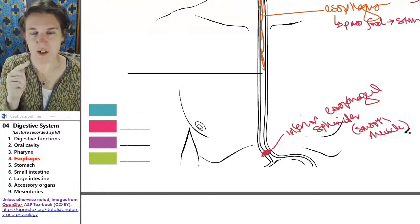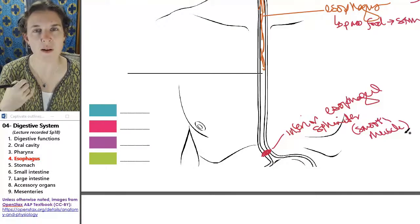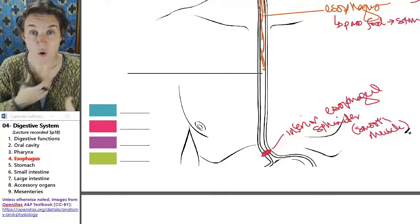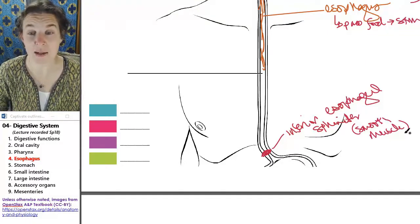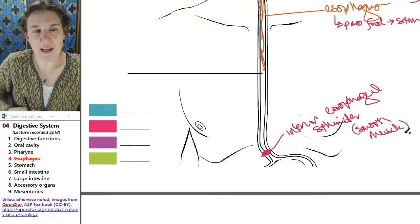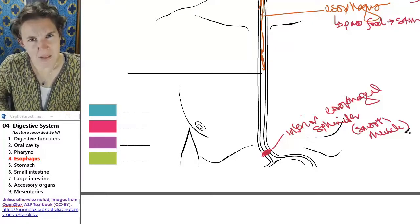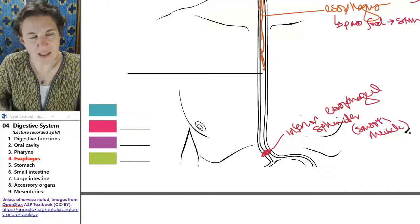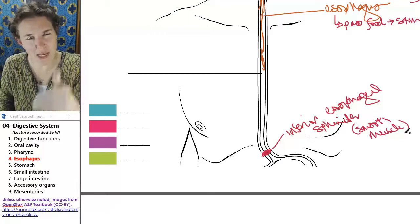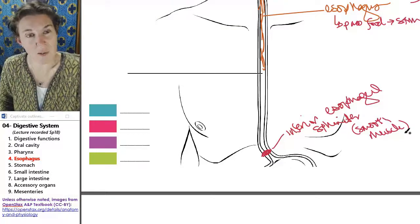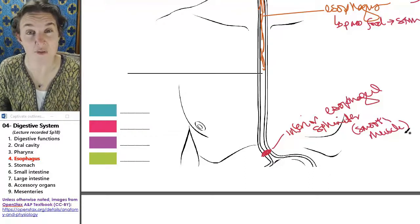Think about your anatomy. The esophagus passes through the thoracic cavity or the mediastinum, passes down the middle through the mediastinum and then enters the abdominal cavity. And when it enters the abdominal, like the stomach is in the abdominal cavity.